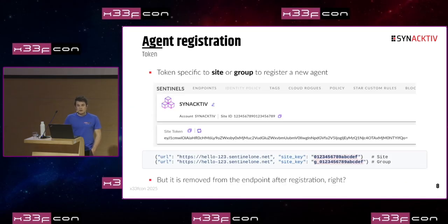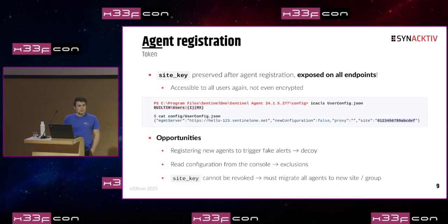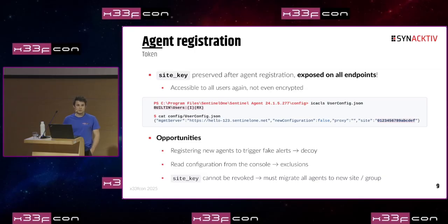Looking at agent registration — the first step when you install the EDR agent — on the console there is what they call the site token, which is base64 encoded. Inside it is a JSON document with the console URL and a specific token called sitekey. We initially believed this would only be used during agent registration, so we shouldn't be able to retrieve it from a compromised endpoint. But by looking at the configuration, we do find this parameter called sitekey — it is therefore exposed on all endpoints where SentinelOne was installed. Because it is in the config folder in user-config.json, it is accessible to all users on the file system without any privilege.